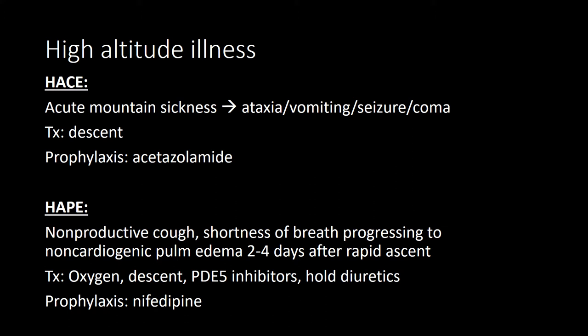Patients with acute mountain sickness will have a headache and other nonspecific symptoms. If they continue to climb higher, it will become high-altitude cerebral edema, with ataxia, vomiting, confusion, seizures, and coma. Descent down the mountain is the definitive treatment and should occur immediately. Dexamethasone and mannitol can also be beneficial, and the prophylaxis is acetazolamide.